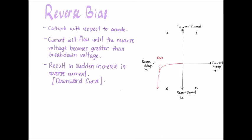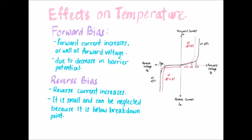Temperature affects both forward and reverse bias. When temperature increases in forward bias, the forward current increases while the barrier potential decreases. In reverse bias, the reverse current will also increase with temperature. The barrier potential decreases by 2 millivolts for each degree increase in temperature.